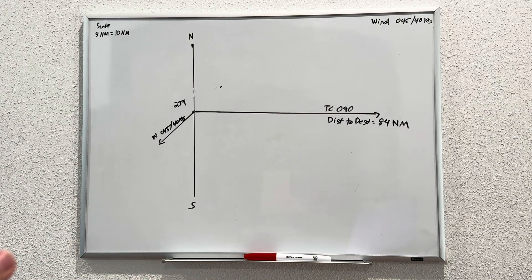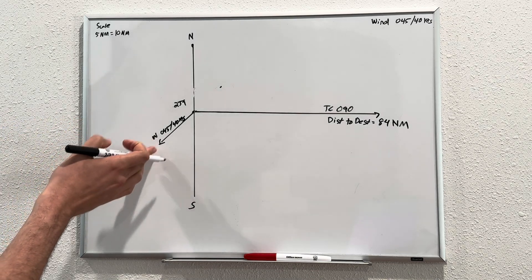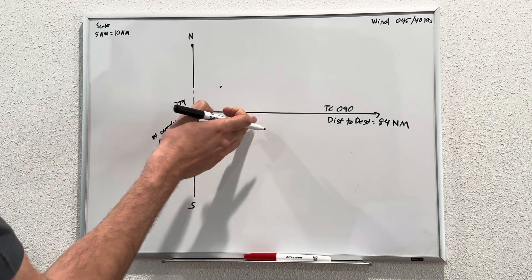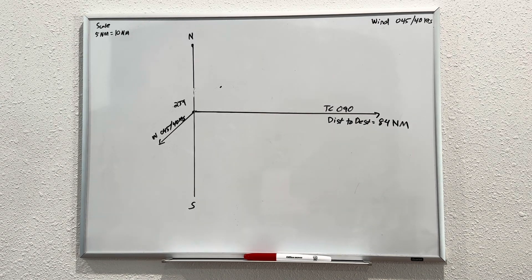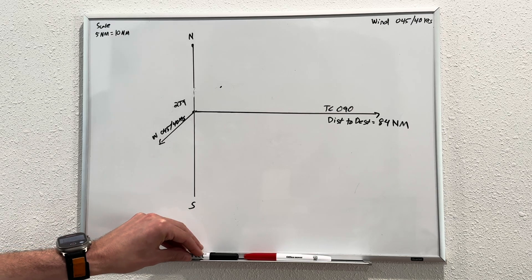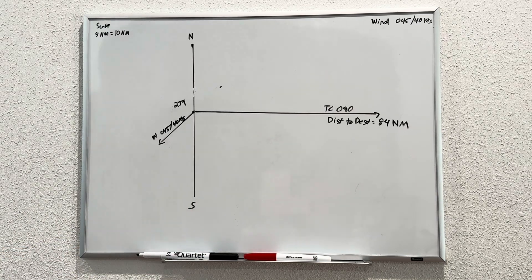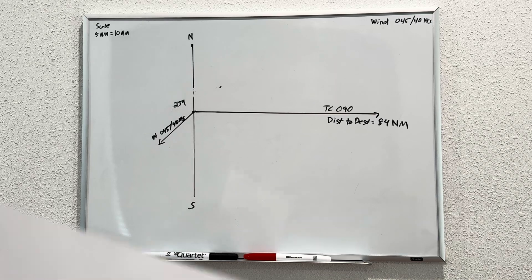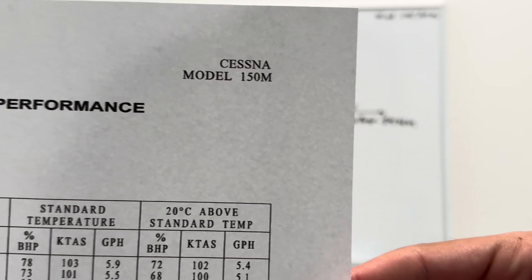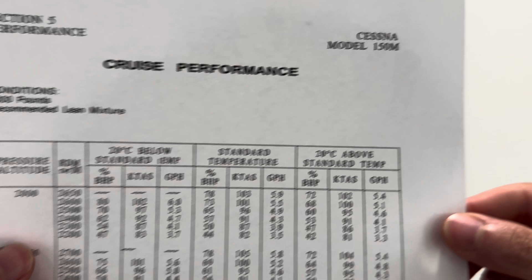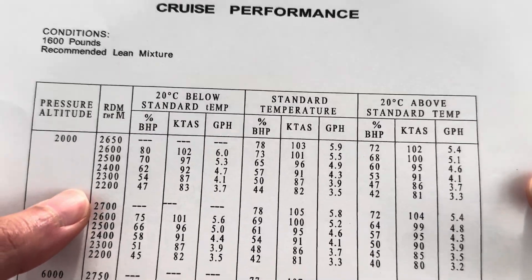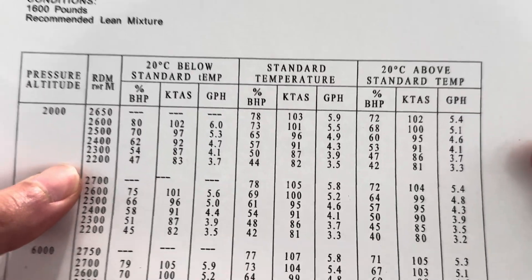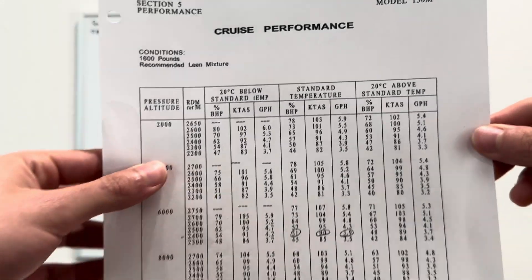So our wind is 045 at 40 knots, and it's blowing in this direction. Great job. We got the second leg of our triangle complete. Now we're going to connect this leg to this leg. But in order to do that, we need to establish what our airspeed is. By looking at the POH, we can establish what the airspeed is here in our little trainer aircraft, the Cessna 150.